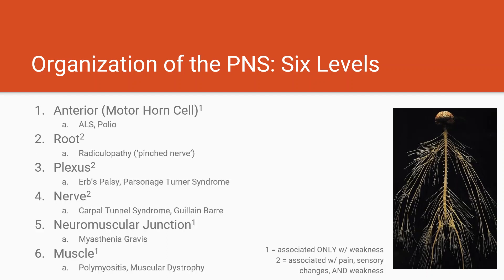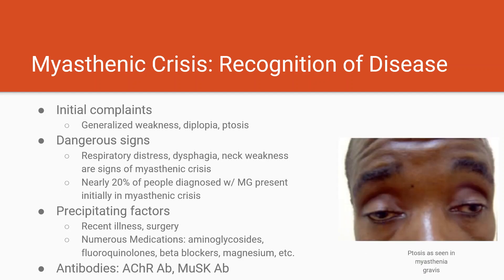Examples you're probably familiar with: the anterior horn cell is involved in diseases such as ALS and polio, which are associated with weakness but no sensory changes. Diseases like myasthenia gravis and muscular dystrophies similarly have only weakness with no pain or sensory loss. On the other hand, diseases like radiculopathy, Erb's palsy, and carpal tunnel are notoriously painful. Notably, Guillain-Barré affects the nerves, roots, and plexuses, making it quite painful — though this component is often overlooked in history taking.